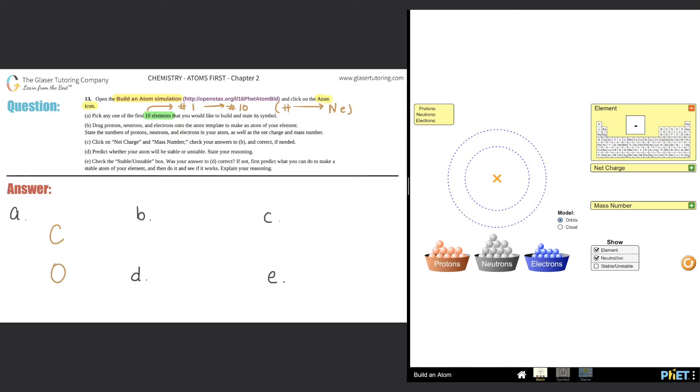Now it says drag protons, neutrons, and electrons onto the atom template to make an atom of your element. State the number of protons, neutrons, and electrons in your atom, as well as the net charge and the mass number. Let's see how we do this. I'm going to select C, I guess.